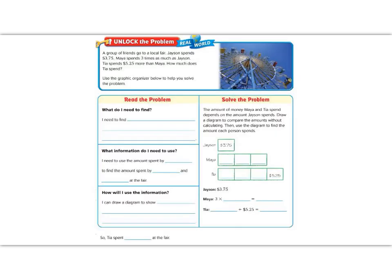Let's begin by reading the Unlock the Problem. It says: A group of friends go to a local fair. Jason spends $3.75. Maya spends three times as much as Jason. Tia spends $5.25 more than Maya. How much does Tia spend?